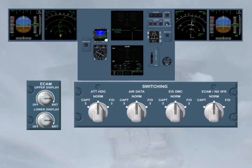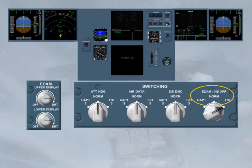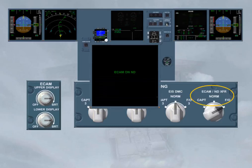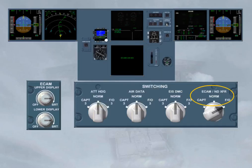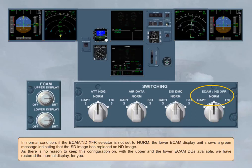In normal condition, if the ECAM ND transfer selector is not set to normal, the lower ECAM display unit shows a green message indicating that the SDE image has replaced an ND image. As there is no reason to keep this configuration on, with the upper and the lower ECAM display units available, we have restored the normal display for you.